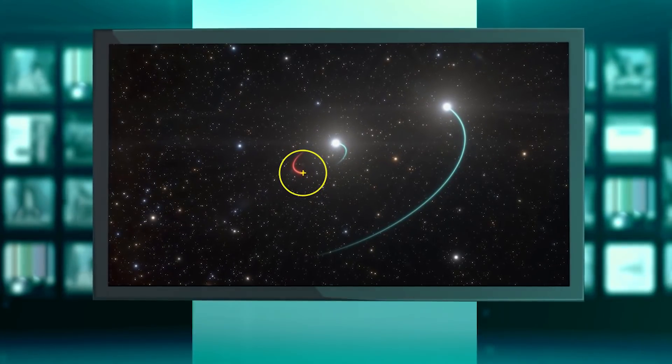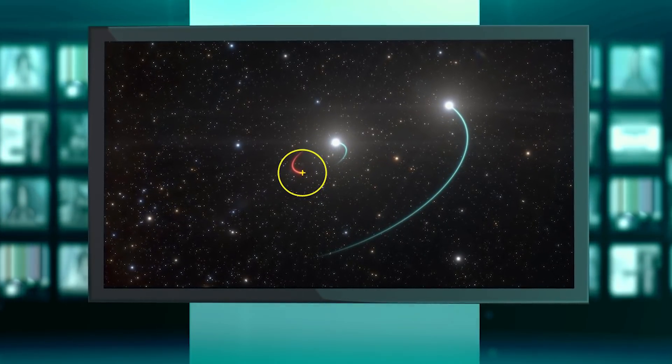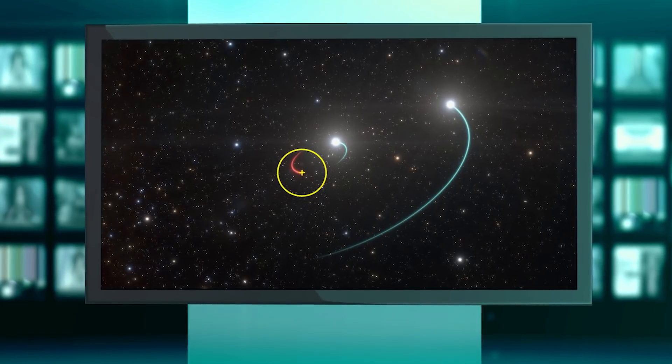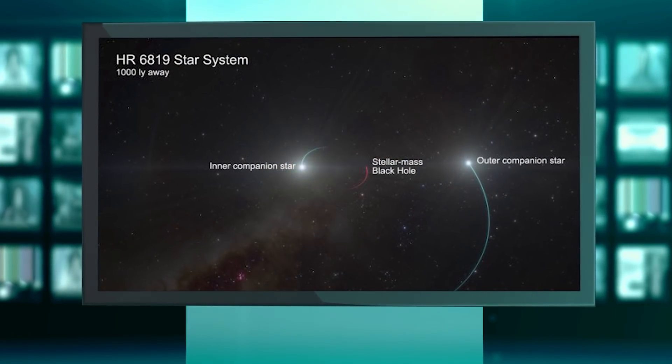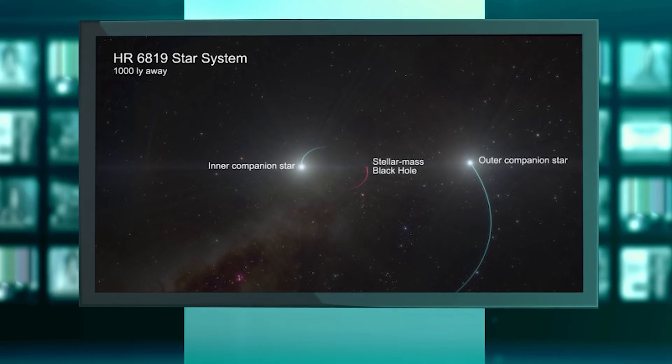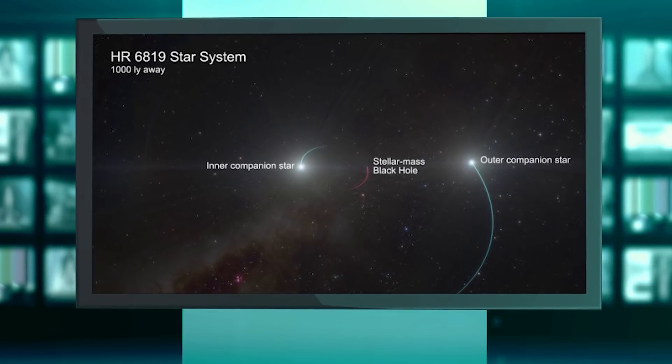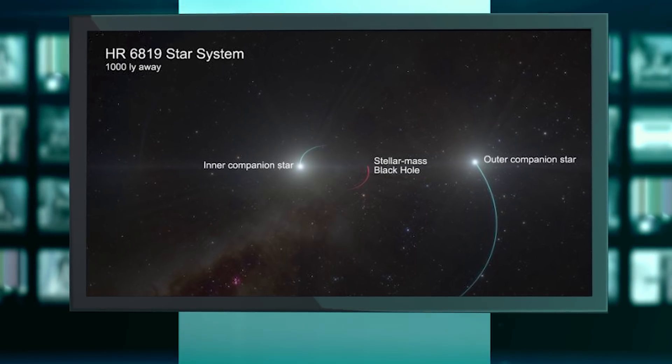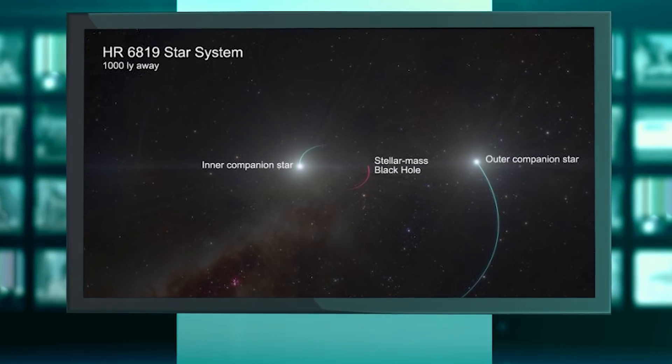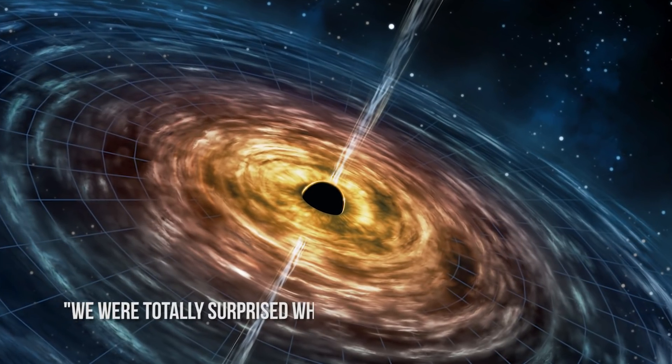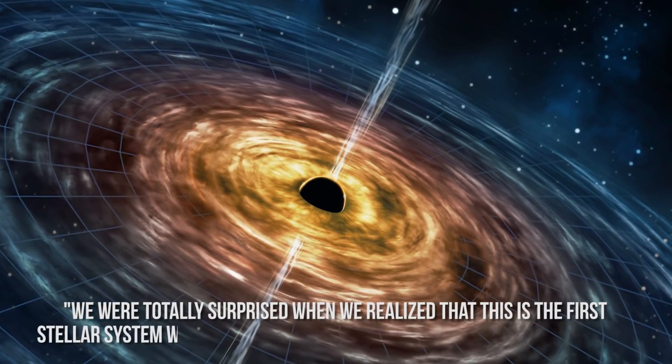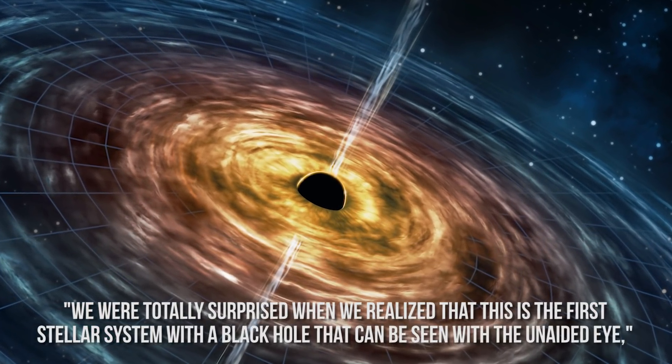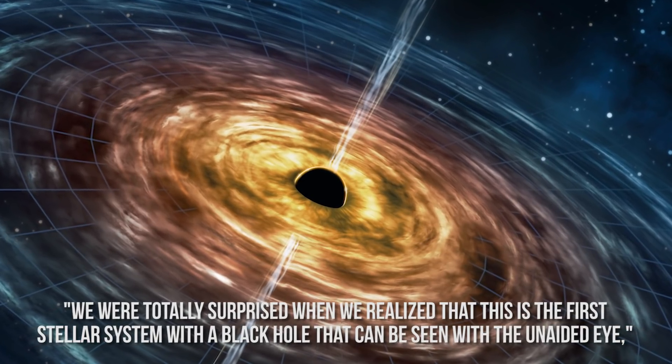While you may not be able to find the black hole of HR 6819 while stargazing from your backyard, sky watchers in the Southern Hemisphere can see the stars in the HR 6819 system in the night sky without the help of binoculars or a telescope, which is quite a thing, as the team revealed.